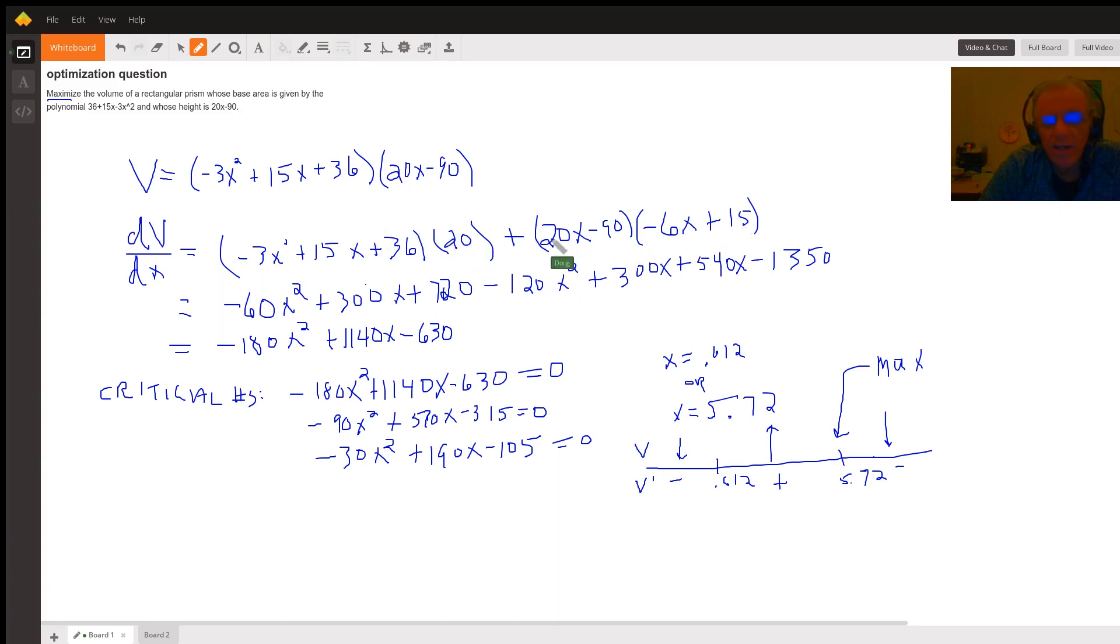Distribute the 20, multiply these two binomials together, combine similar terms, and you get something that looks like this right here.